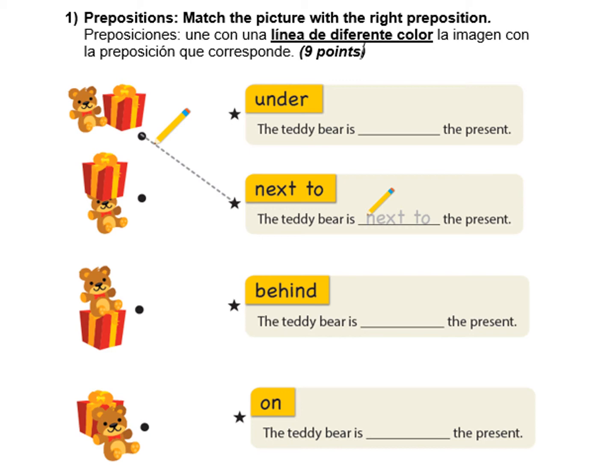O sea, tienen que unir con una línea del color que ustedes quieran. Lo ideal es que sea de diferente color. Acá, por ejemplo, vamos a ver la primera. Es el ejemplo que dice next to.